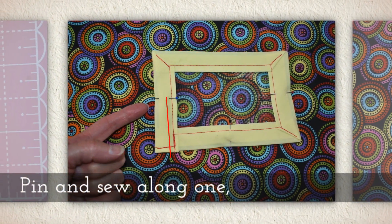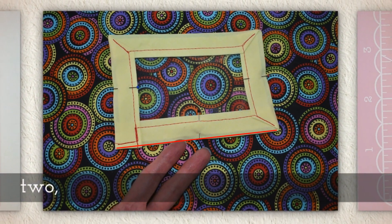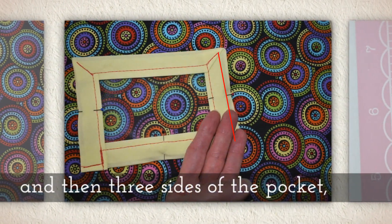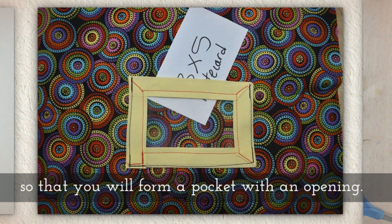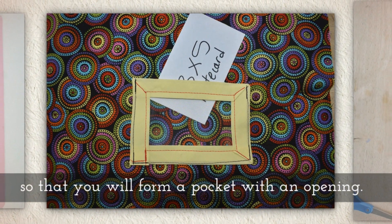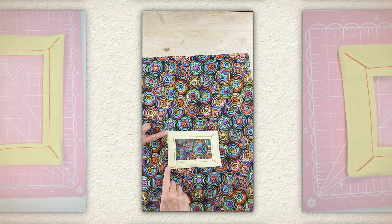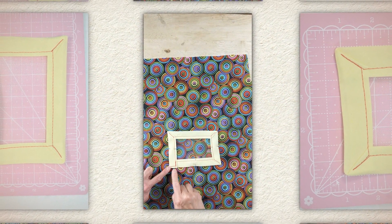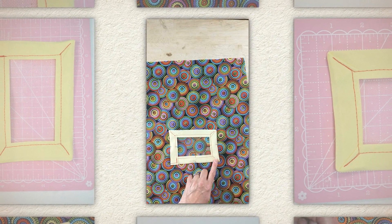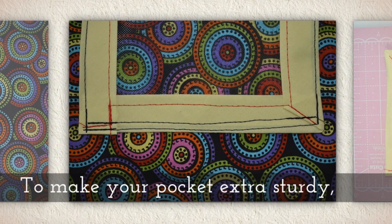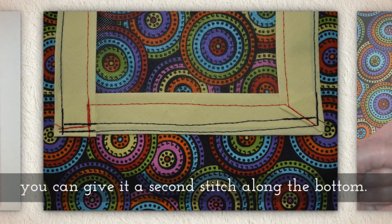Now when you insert a 3x5 card, your snipped and sewn corner will be up here where I'm pointing. Pin and sew along one, two, and then three sides of your pocket, so that you will form a pocket with an opening. To make your pocket extra sturdy, you can give it a second stitch along the bottom.